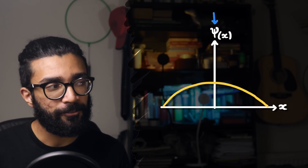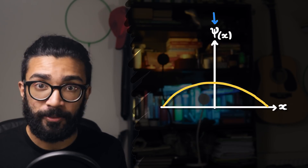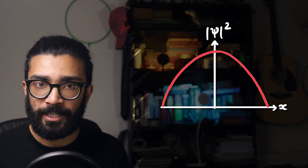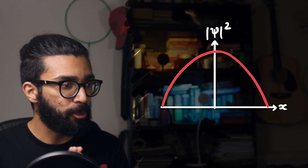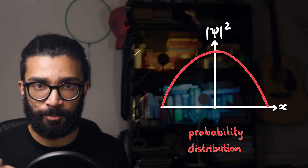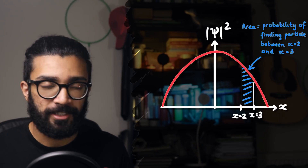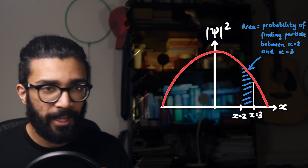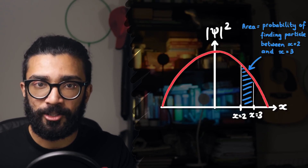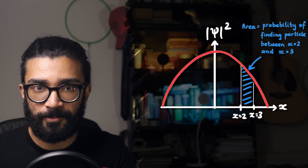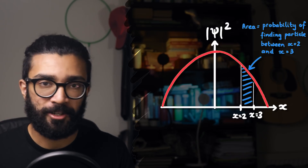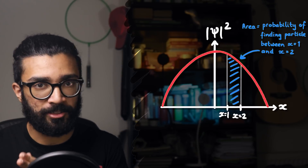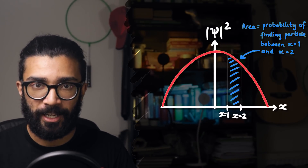In this particular case, we had a wave function written as a function of the position of our particle. And so when we squared it, we found the probability distribution for that particle's position. Specifically, the area underneath the curve between two x positions gave us the likelihood of finding that particle between those two x positions. Another quick example: the probability of finding our particle between x equals 1 and x equals 2 is given by this area here.